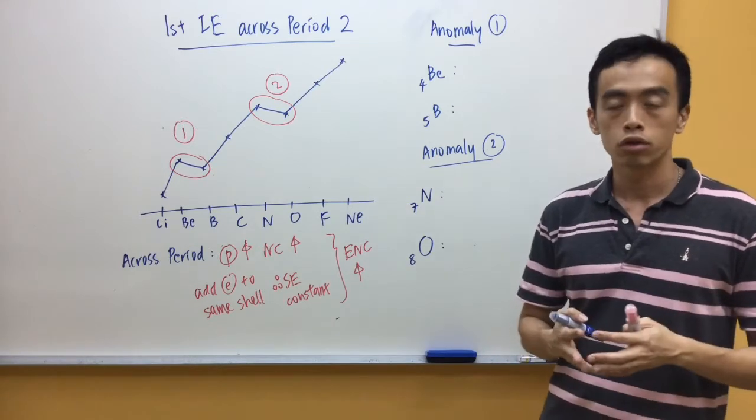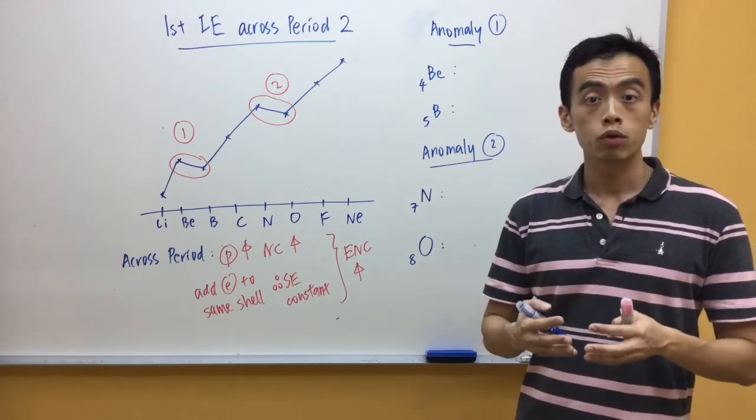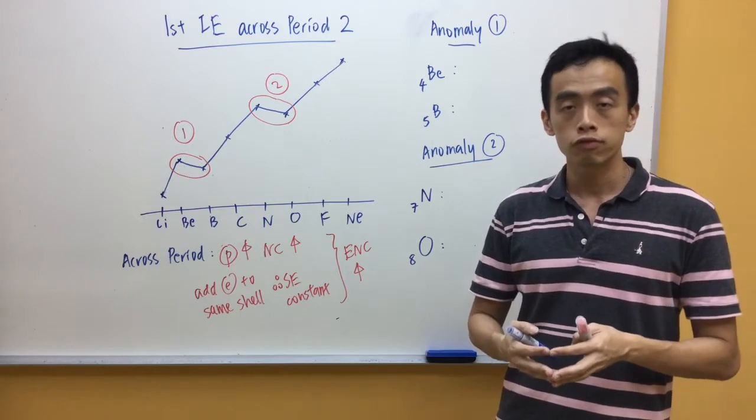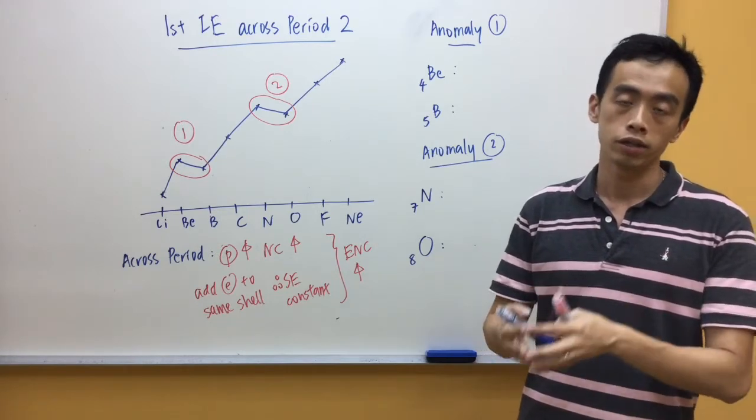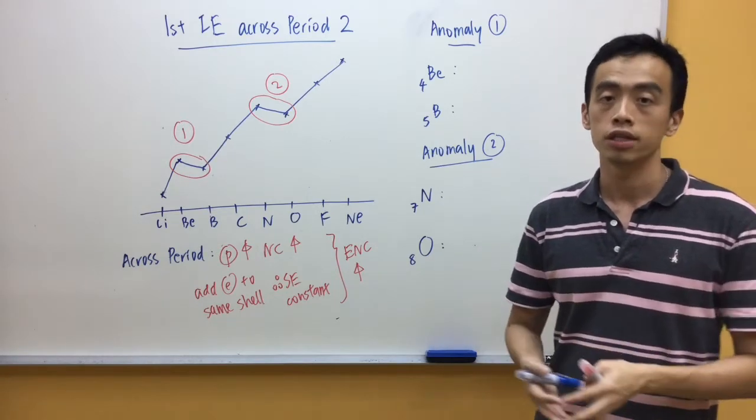We have to write out the electronic configuration, and by looking at which subshell the electrons are being removed from, we can deduce and explain the differences in ionization energy.